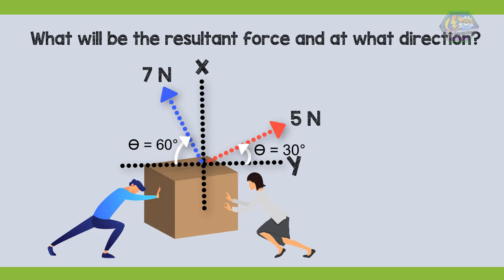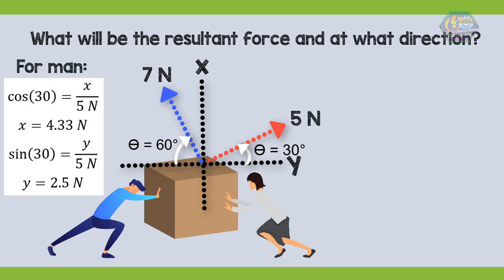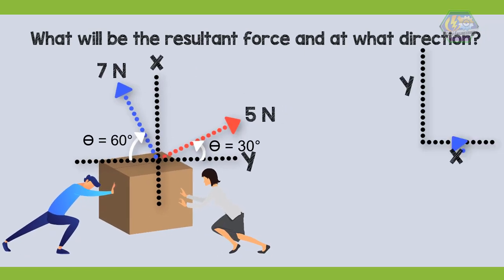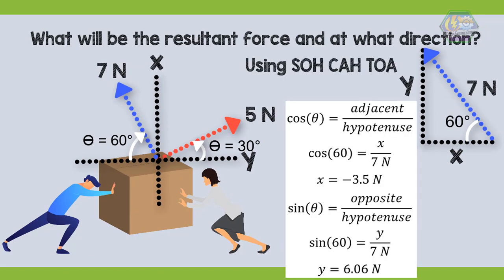To solve this, we need to resolve the X and Y components of both vectors. From the previous example, the X component is 4.33 Newton and the Y component is 2.5 Newton for the first vector. For the second vector, let's view it as a right triangle and use SOH-CAH-TOA again. We get the X component equal to negative 3.5 Newton and the Y component equal to 6.606 Newton. The X component is negative because it lies on the negative X axis.